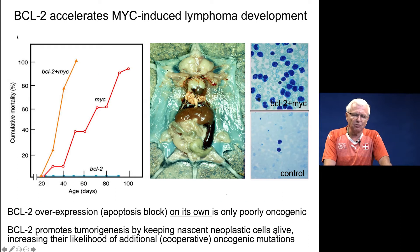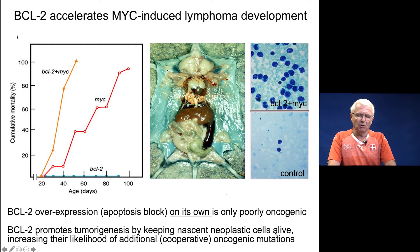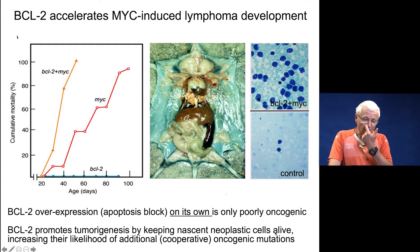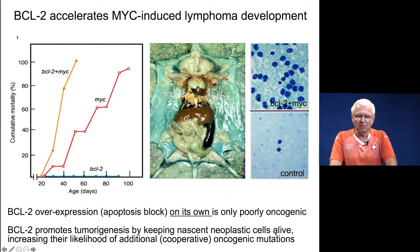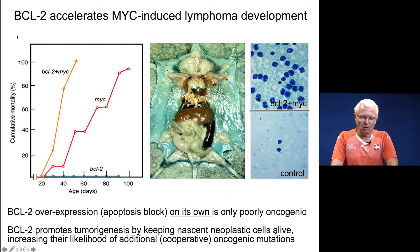This was formally demonstrated in transgenic mice. Mice expressing BCL2 in B cells develop lymphoma at very low incidence and very late in life. Mice expressing the oncogene MYC in B cells develop tumors quite rapidly. But mice expressing both BCL2 and MYC in their B cells all develop very aggressive lymphoma by 40 days of age. This shows that overexpression of BCL2 alone is only poorly oncogenic; the main role of blocking apoptosis in tumor development is to give nascent neoplastic cells more time to acquire other cooperative oncogenic lesions.